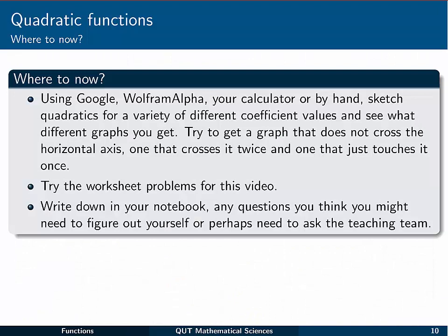Okay, so what to do now? Have a look at Google, or Wolfram, and play around with making some graphs of quadratics for a variety of different coefficient values. See what happens when you graph different functions. See if you can get a graph that doesn't cross the horizontal axis at all. One that crosses it twice, like we've just done. And try to get one that just touches it just at one point.